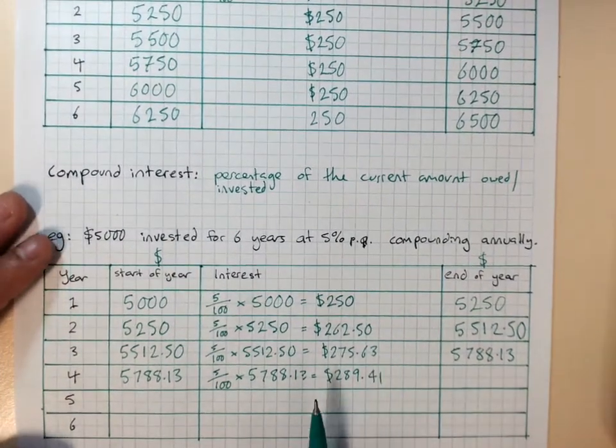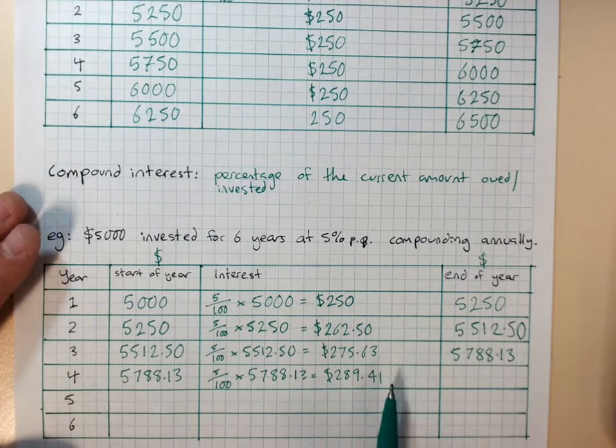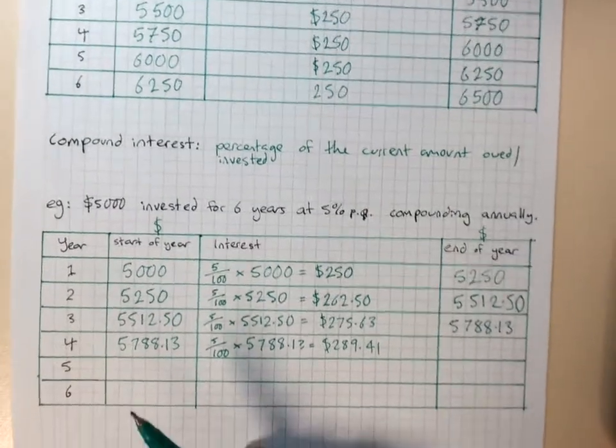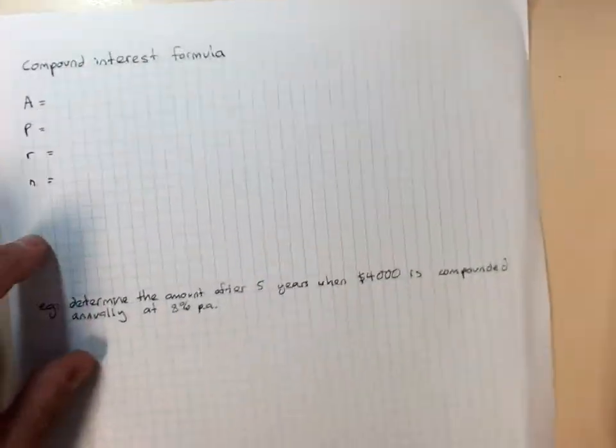Compound interest is what most banks, mortgages, credit cards, all of that use. Fortunately, because the table is quite time consuming, there's a formula.